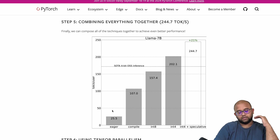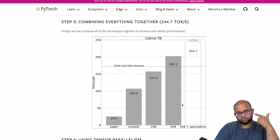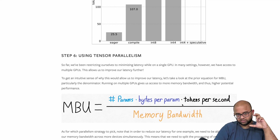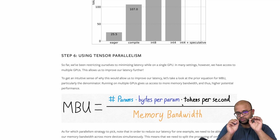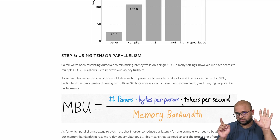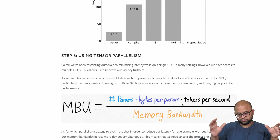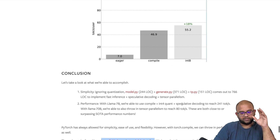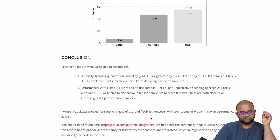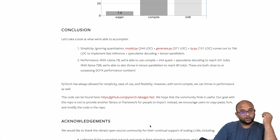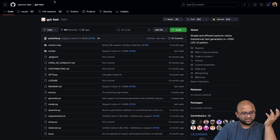Now we have looked at the key concepts the PyTorch team used to improve tokens per second from 25.5 to 244.7 by combining torch.compile, int4 quantization, and speculative decoding. They also included tensor parallelism, which they used on the larger 70 billion model — the idea being you can use multiple GPUs to split operations. All of this was done in less than a thousand lines of code, available in a repository called gptfast.